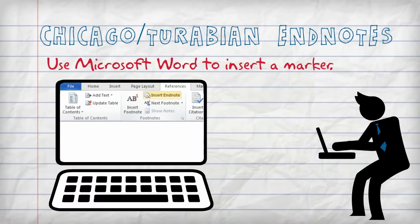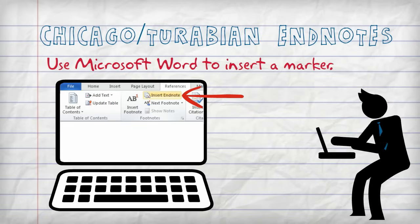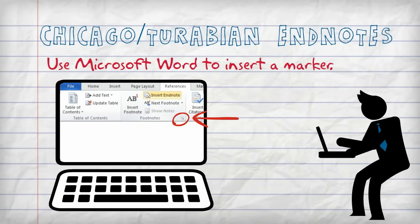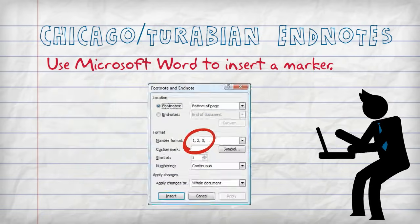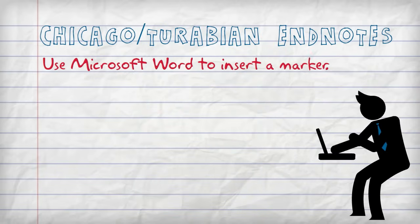You can use Microsoft Word to insert a marker — click Insert Endnote on the References tab. Also, make sure you're using Arabic numerals, the normal ones, rather than Roman numerals.